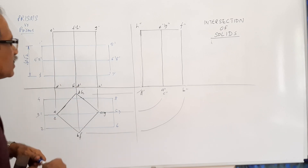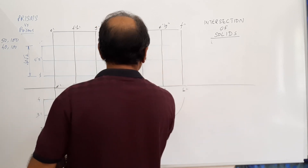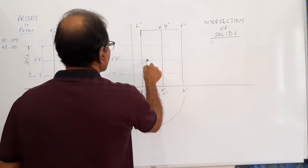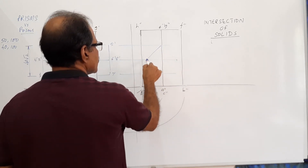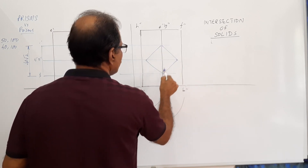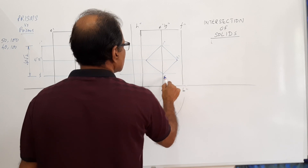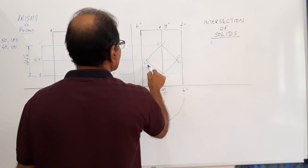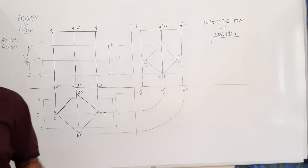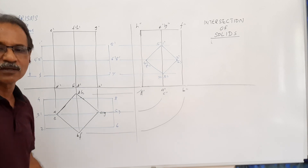The end view of the penetrating prism is a square. To draw it, take half the width (equal to the side, 40 mm) and mark it to either side of the axis, then connect them. This gives the end view of the penetrating prism, with corners labeled 1W′, 2W′, 3W′, 4W′, 5W′, 6W′, 7W′, 8W′. You have now drawn the plan, elevation, and end view of the two prisms — one vertical prism penetrated by another horizontal square prism.